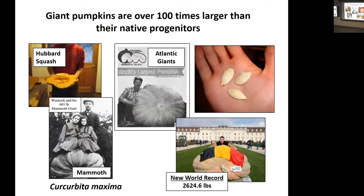The Atlantic Giant is used in almost all giant pumpkin competitions nowadays. The world record is somewhere around 2,600 pounds — these can grow very large.